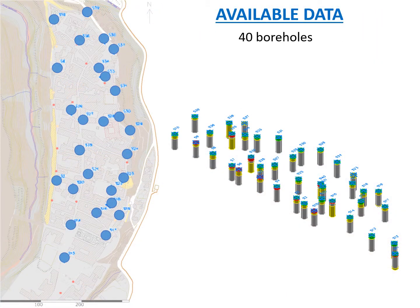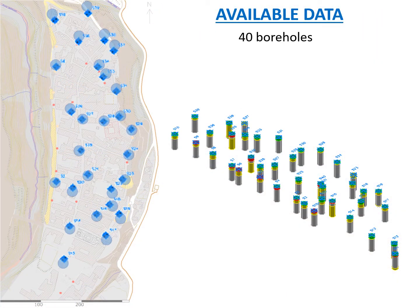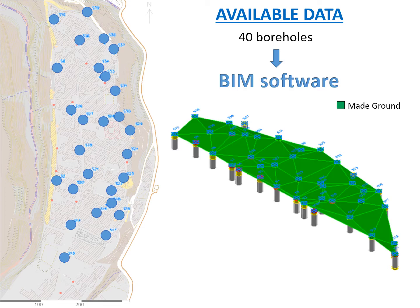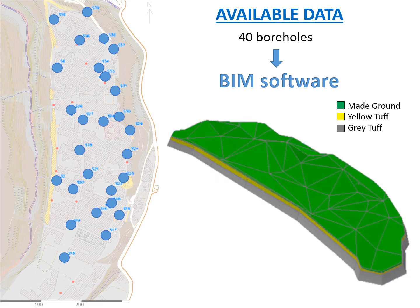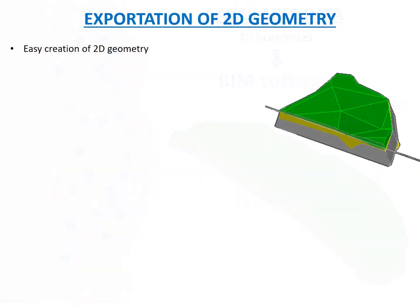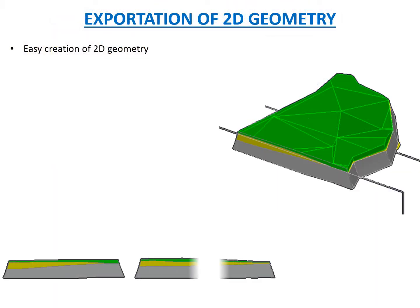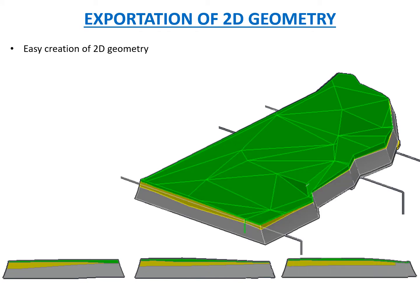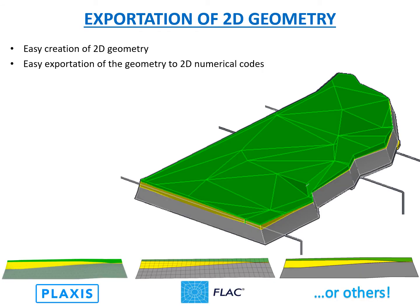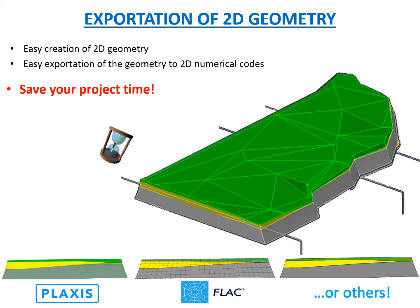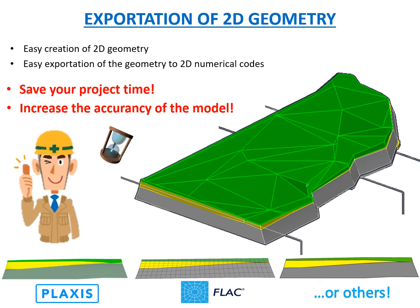The numerous boreholes available can be easily imported into the BIM software to create the interface surfaces between soil layers and the 3D geometry of the entire hill. 2D sections can then be obtained and directly imported in the form of numerical codes. This is a major advantage, since the analysis can be repeated rapidly in any section of the model, saving time and increasing accuracy.